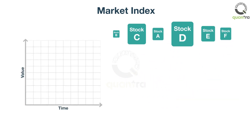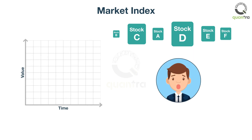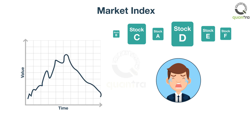The movements in the index reflect the changing expectations of the market participants. If the index value goes up, it depicts that the market participants think that the future will be better. Otherwise, the index value drops if the market participants think pessimistically.